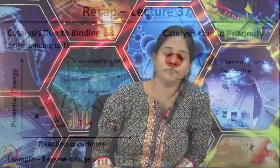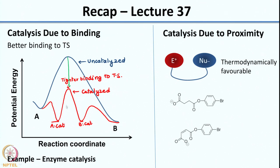Welcome. In the last class we had looked at 2 different types of catalysis which are related to each other. We had looked at catalysis due to binding. When you have a reaction coordinate shown in red on your screen, that would be a good representation of catalysis due to binding, where you have the reactant-catalyst complex which is highly stable, so lower in energy.